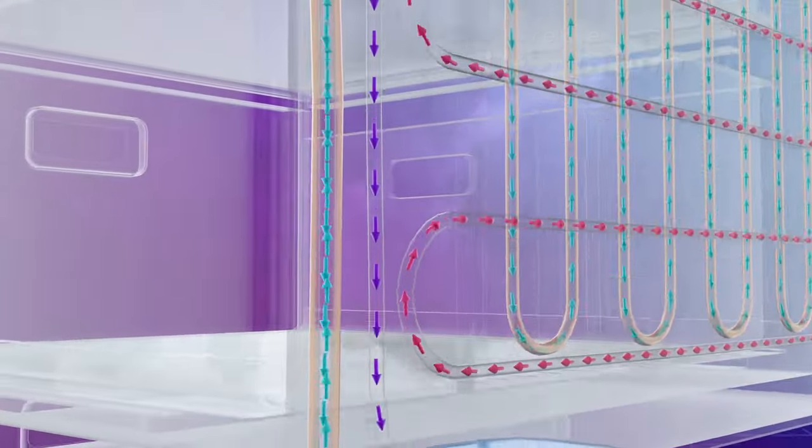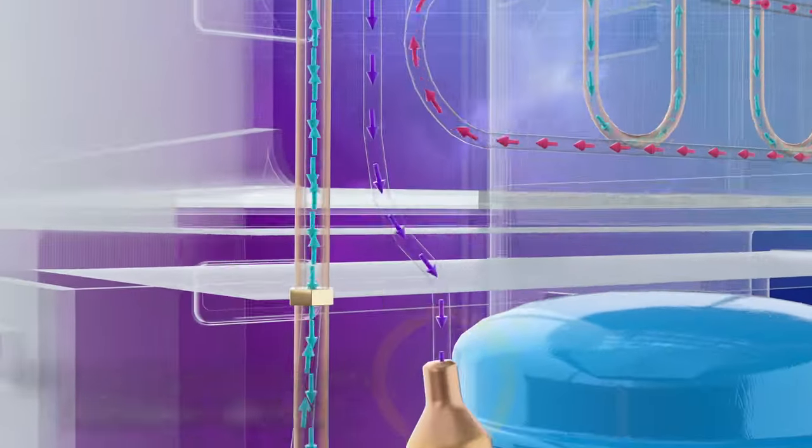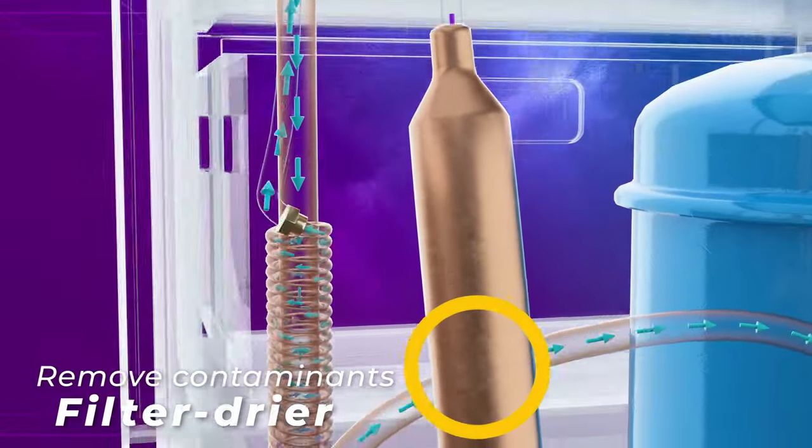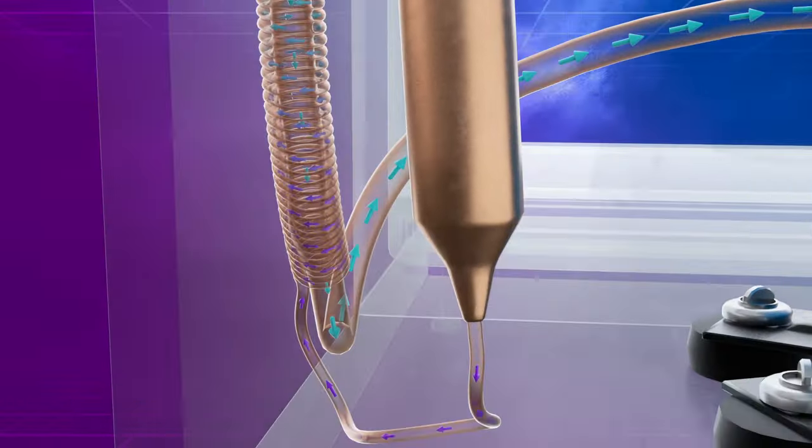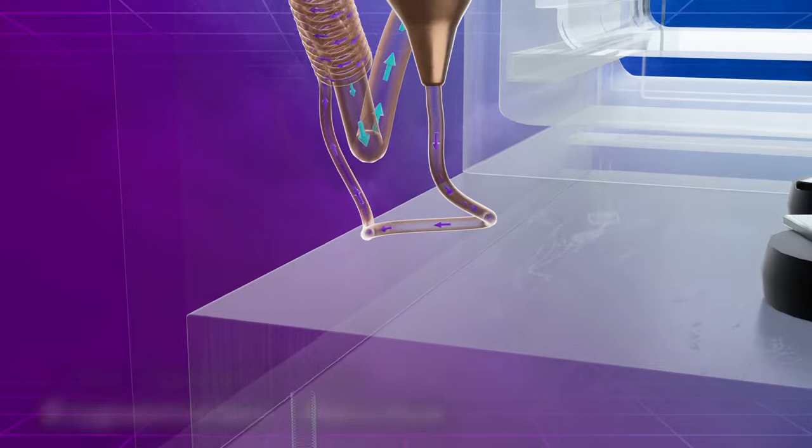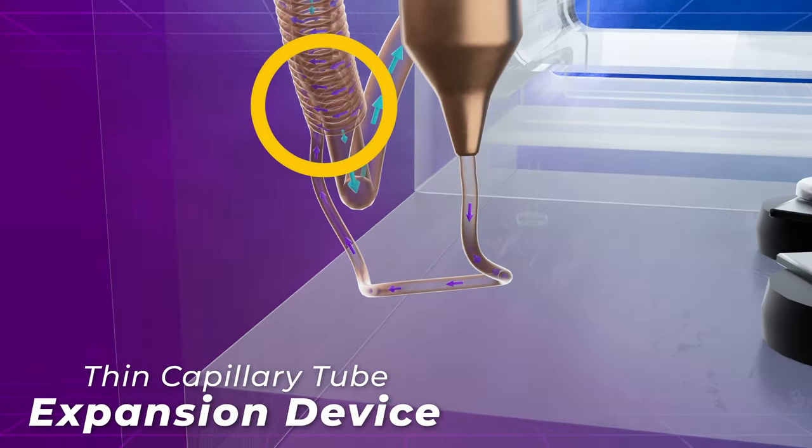From there, the refrigerant flows through a filter dryer to remove any contaminants and moisture. It then enters the expansion device, which is often a thin capillary tube.